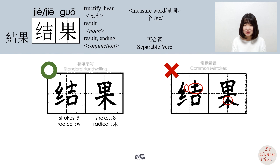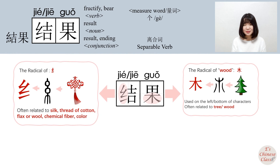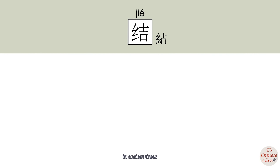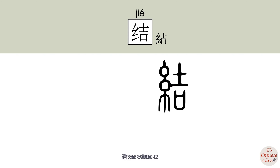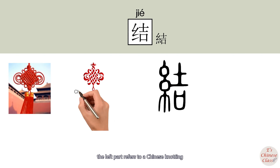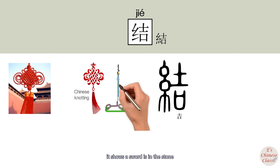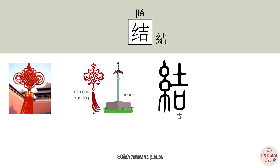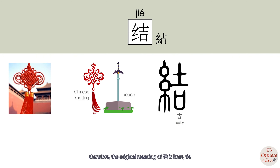In ancient times, 结 was written differently. The left part refers to a Chinese knotting, and the right part is another character, 吉. It shows a sword in a stone, which refers to peace — a peaceful life means lucky, so 吉 means lucky. Therefore, the original meaning of 结 is a knot.